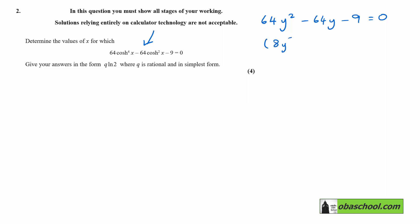You would get 8y, sorry just 8y in this case because we replaced cosh squared with y, so 8y take away 9, 8y plus 1. So if we put the cosh back in there we have 8 cosh squared x take away 9 and 8 cosh squared x add 1 is equal to 0.